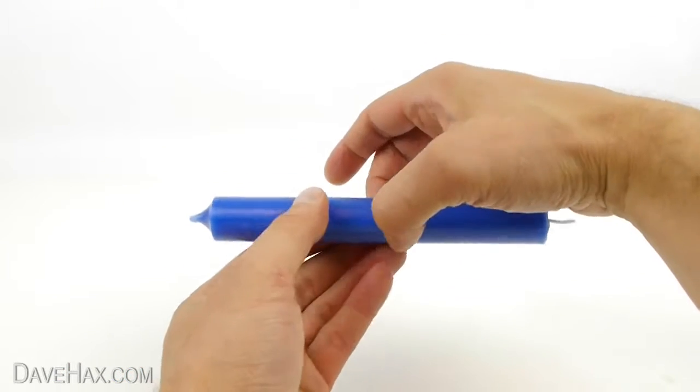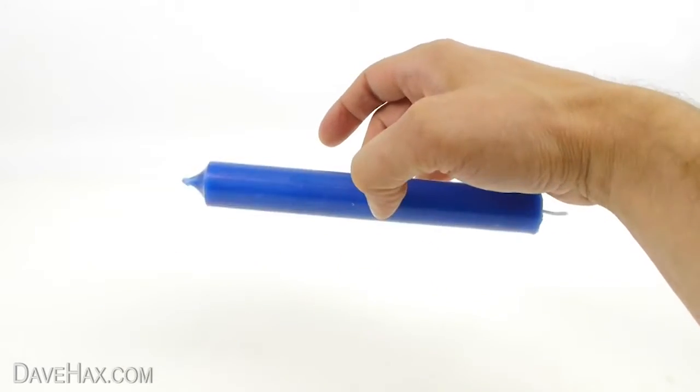Next, roughly work out where the balancing point of the candle is and put a mark in the wax.